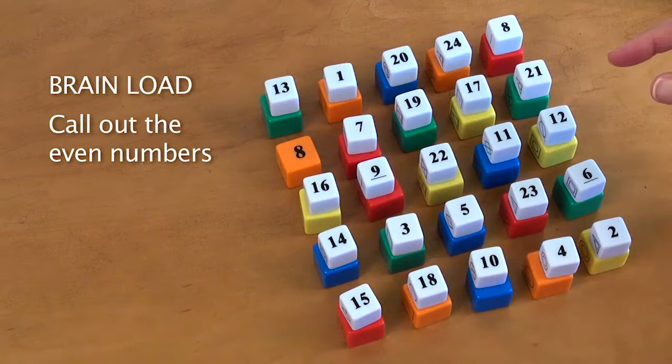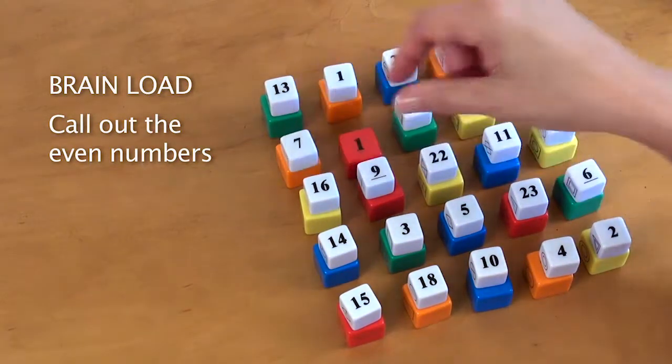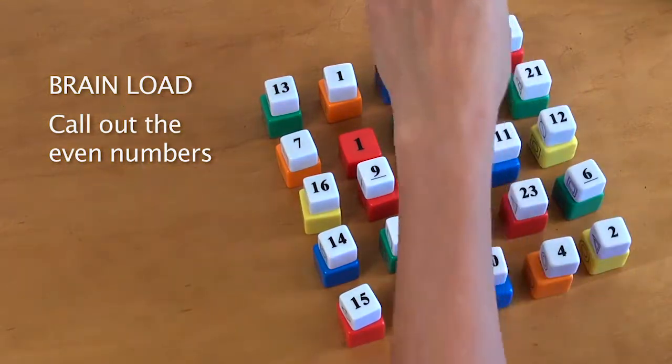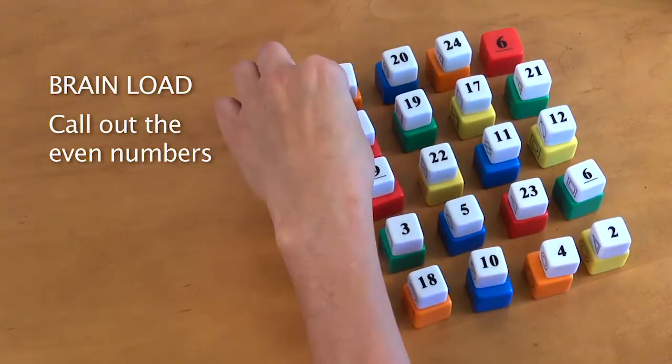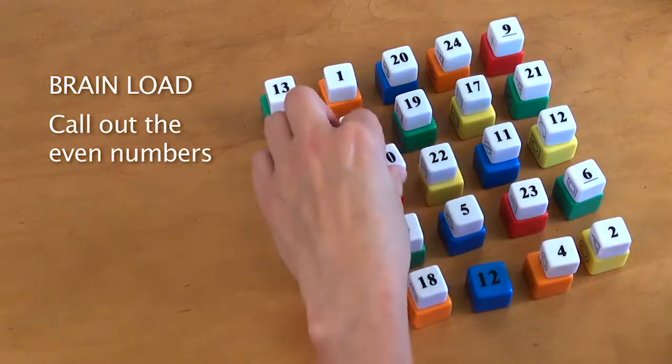Your second brain load is to call out only the even numbers. So you're going to keep moving in sequence but only say out loud 8, 10.